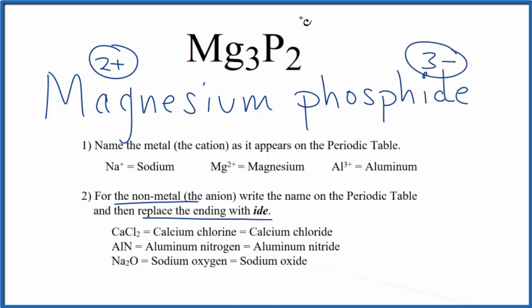So 3 minus times 2 plus, that's 6 minus. And then 3 times 2 plus, that's 6 plus. These cancel out.